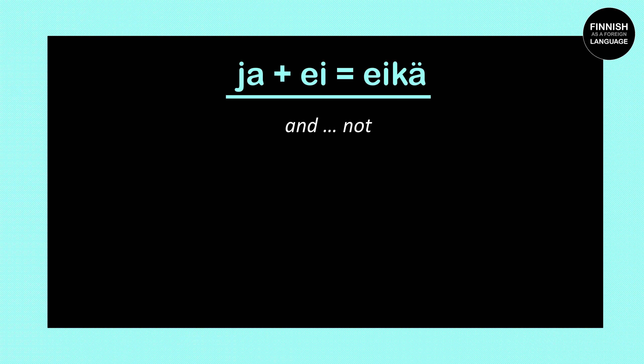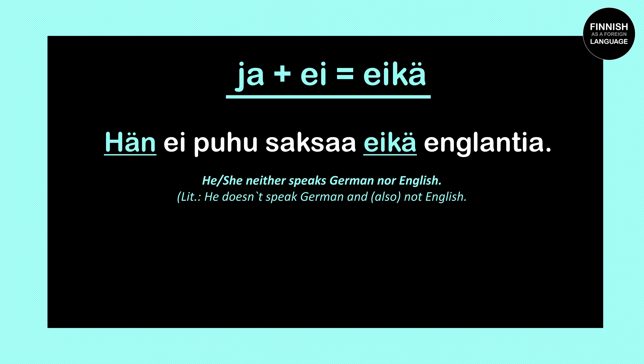EIKE is a combination of the words ja plus a, and it means 'and not'. Let's take a look at one example: he or she neither speaks German nor English. So literally EIKE means 'and not', but in English we rather say 'neither nor'.